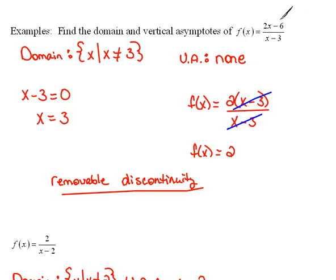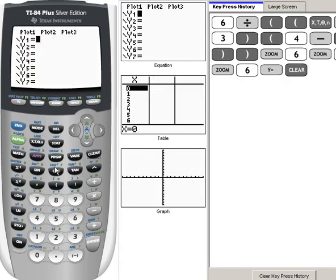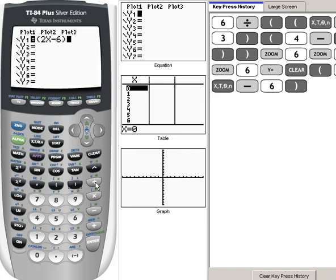And in fact, if I were to graph this, let's go ahead and graph that really quickly. I'm going to go to my y equals. I'm going to put the numerator in, in parentheses, 2x minus 6. I'm graphing that original problem, divided by x minus 3.